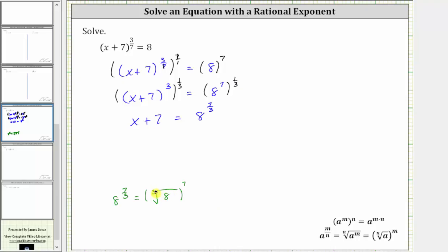The cube root of eight is two, so this simplifies to two to the seventh, which equals 128. Now we know our equation is x plus seven equals 128. For the last step, we subtract seven from both sides. Simplifying, we have x equals 121. This is the solution to the given equation.